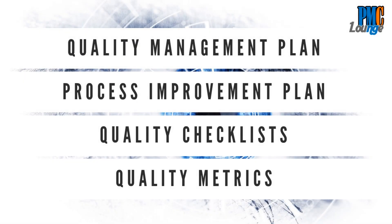Hello and welcome to pmclounge.com. Today we are discussing the outputs of the Plan Quality Management process. Four of them are very important: two are sub-plans of the project management plan — the Quality Management Plan and the Process Improvement Plan — and then there are Quality Checklists and Quality Metrics. Without further ado, let's get into it.